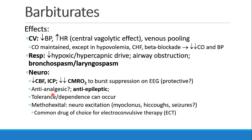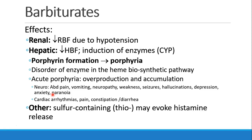Patients can become tolerant to barbiturates and become dependent on them. With methohexital, we do see some neuroexcitation symptoms — myoclonus, hiccups, and some question of seizure activity. Methohexital is one of the drugs of choice currently for electroconvulsive therapy. In the kidney, barbiturates decrease renal blood flow due to hypotension, and decrease hepatic blood flow. They also lead to induction of cytochrome enzymes.